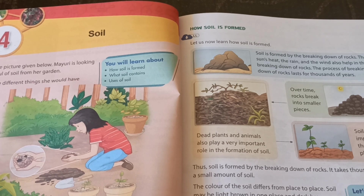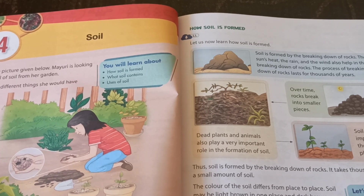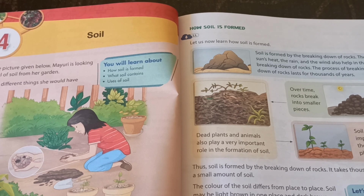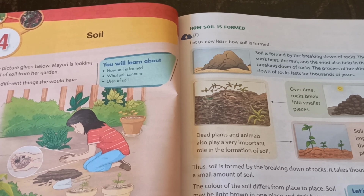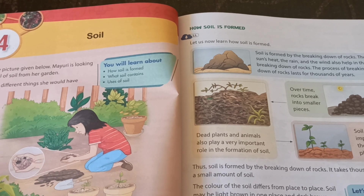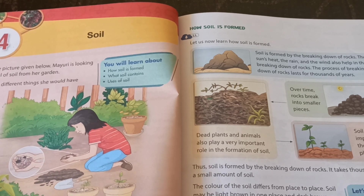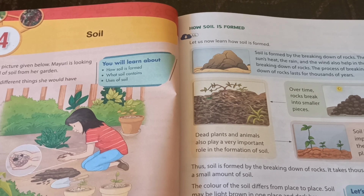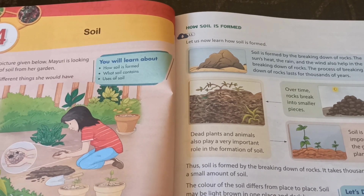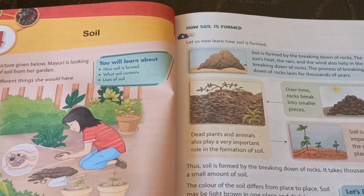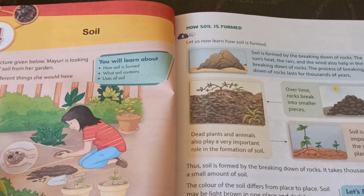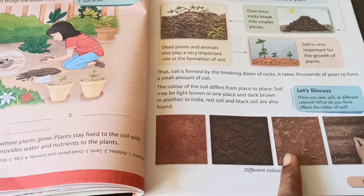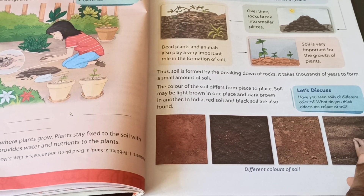The color of the soil differs from place to place. Soil may be light brown in one place and dark brown in another place. In India, red soil and black soil are also found. Have you seen soil of different colors? What do you think affects the color of the soil? You can see here different types of soils: red soil, black soil, brown soil, and mixed soil.